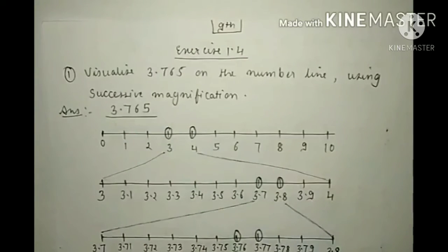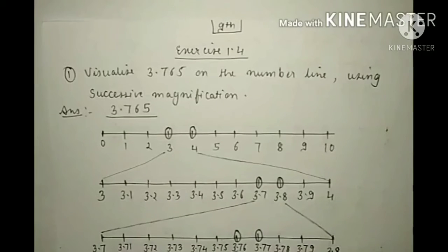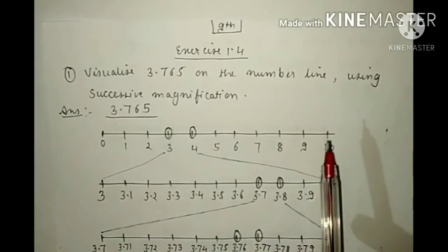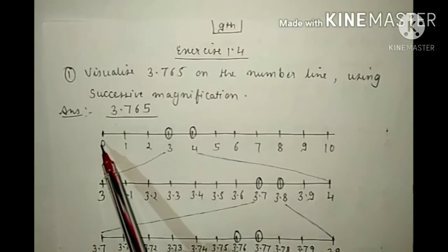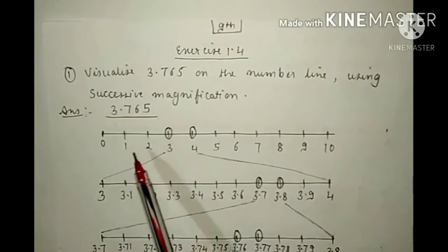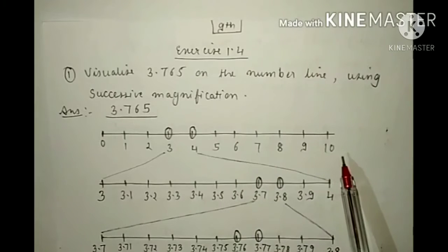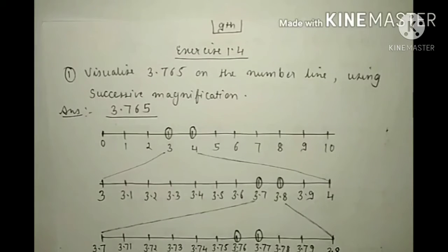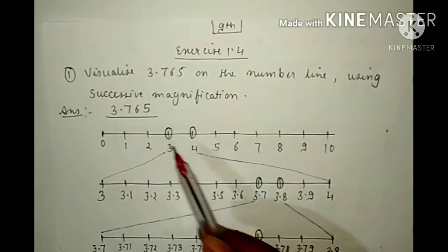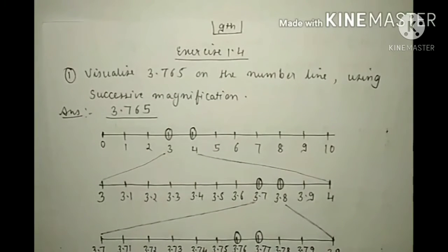So first, make the number line starting from 0. Since this is a positive number, make only the positive number line from 0 to 10: 0, 1, 2, 3, 4, 5, 6, 7, 8, 9, 10. Now, since this number is between 3 and 4, mark 3 and 4 on this number line.